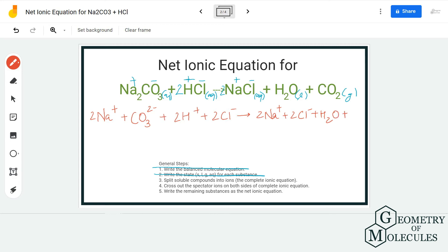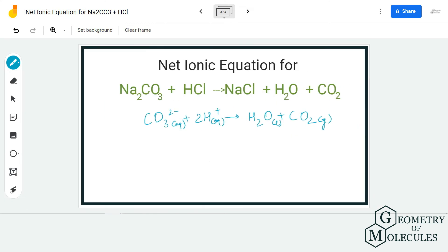Once you have this equation, you can cancel the spectator ions. These are ions on both sides of the equation in which there is no change. I'm going to cross out the 2Na⁺ on both sides because this is a spectator ion. Besides that, Cl⁻ is also a spectator ion, so I'll cross that out as well. After crossing out, whatever I'm left with is the net ionic equation for this reaction. You can see that CO₃²⁻ + 2H⁺ → H₂O + CO₂ is the net ionic equation.